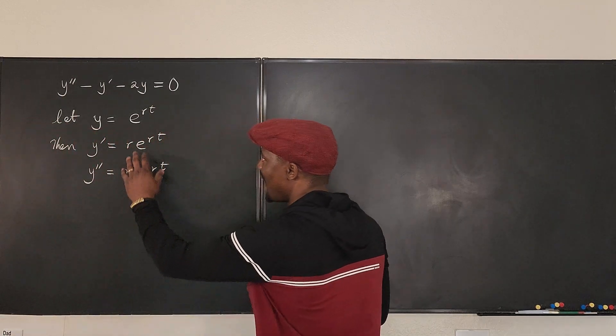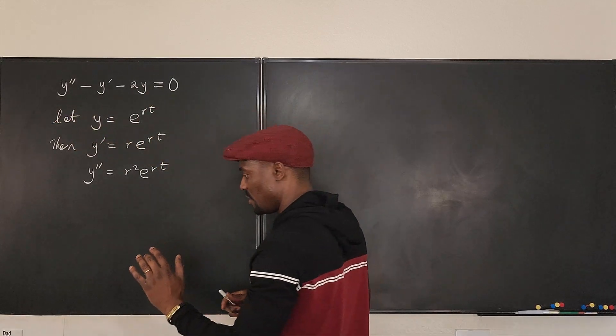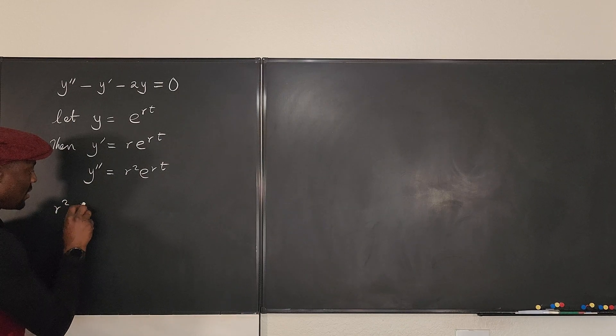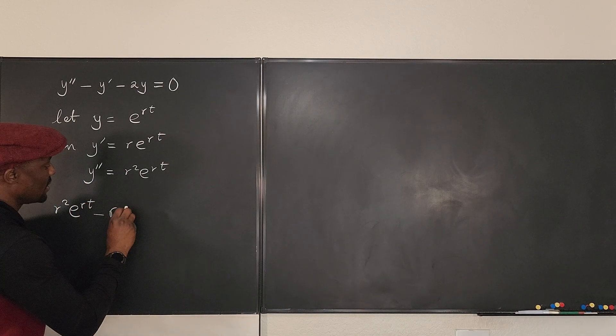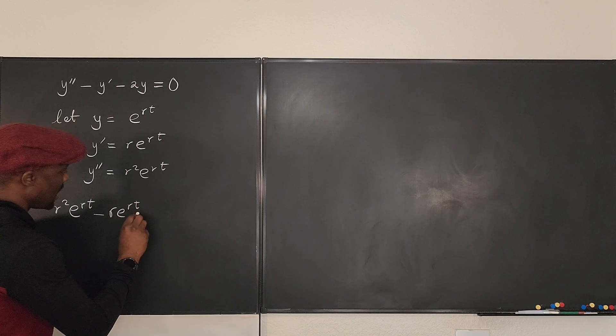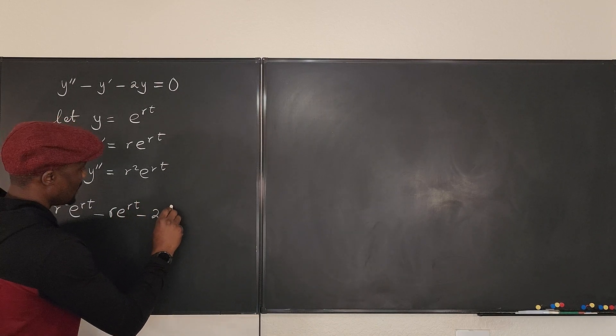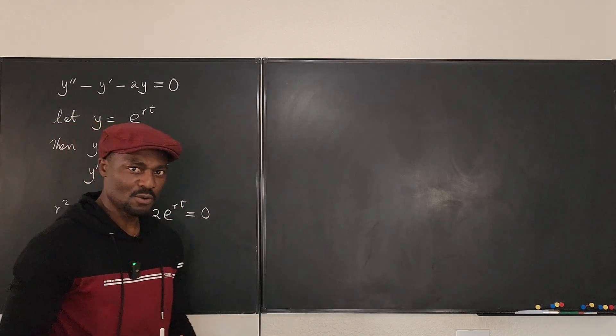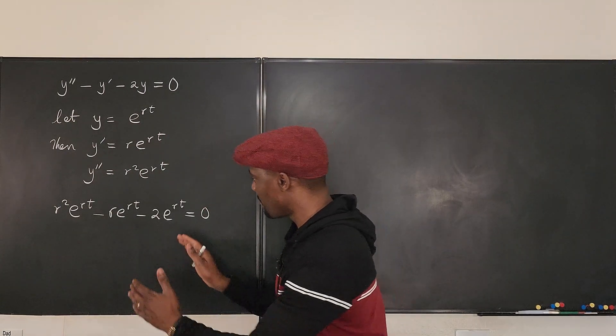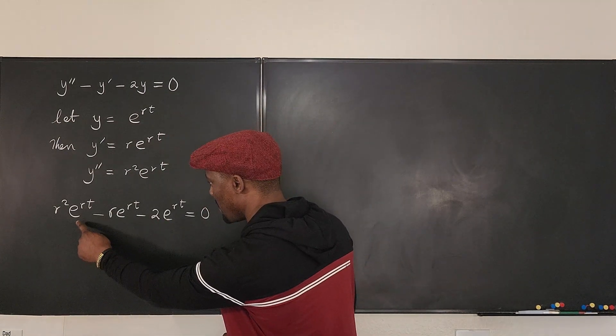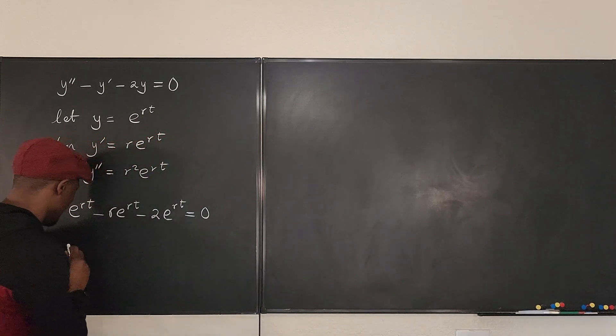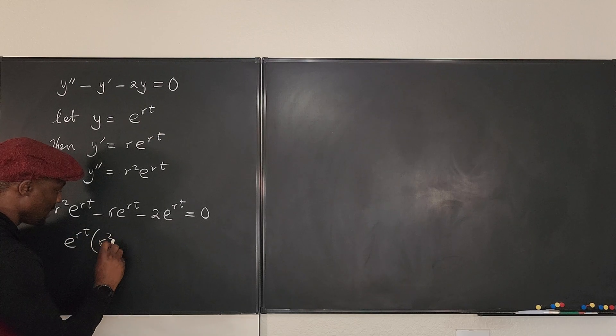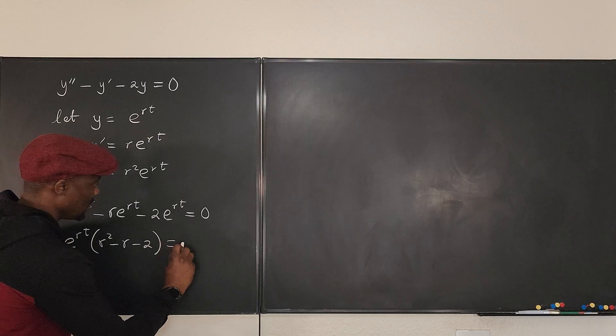So we can take these three parts and go plug it into the original equation and see what we're going to get. We're going to get r²e^(rt) - re^(rt) - 2e^(rt), and our answer on the right is going to be zero. Can we solve this equation? Yes. Let's see. Let's factor out whatever is common. We know that e^(rt) is common to all the terms, so we have e^(rt) multiplied by (r² - r - 2) is equal to zero.